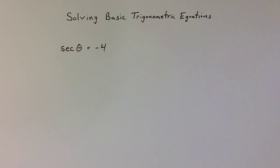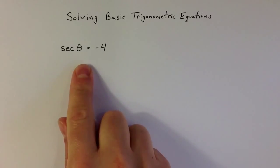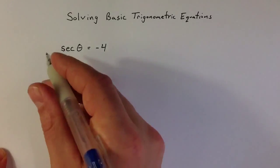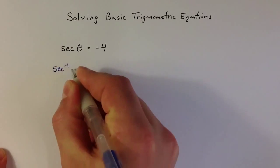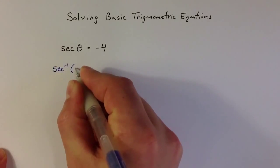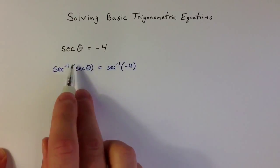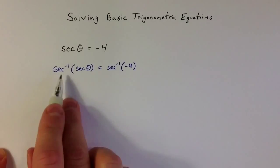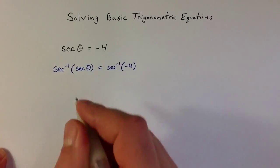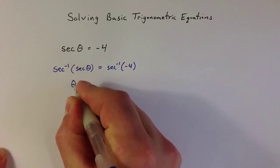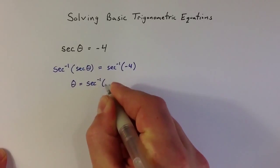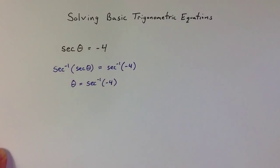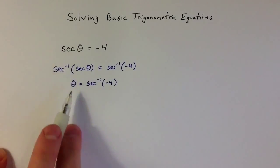Let's take a look at the process of solving some basic trigonometric equations, like secant of theta equals negative 4. One approach we might take is to recognize that if I apply an inverse trigonometric function — secant inverse — to both sides, it cancels out the secant on the left-hand side, so this becomes theta equals secant inverse of negative 4. This is one of the powerful things about inverse functions: they can help us undo the original function.